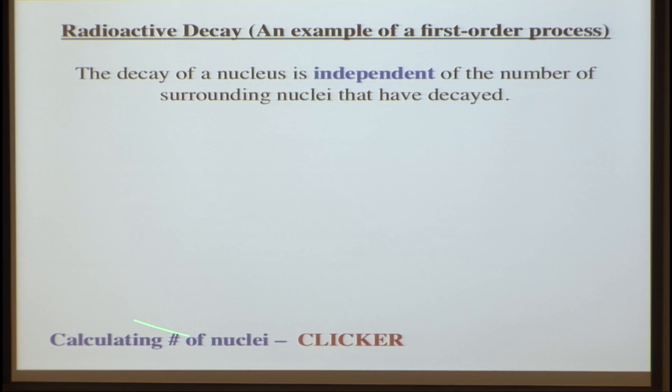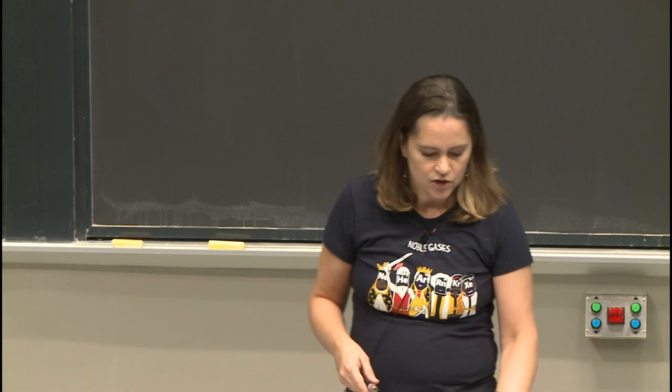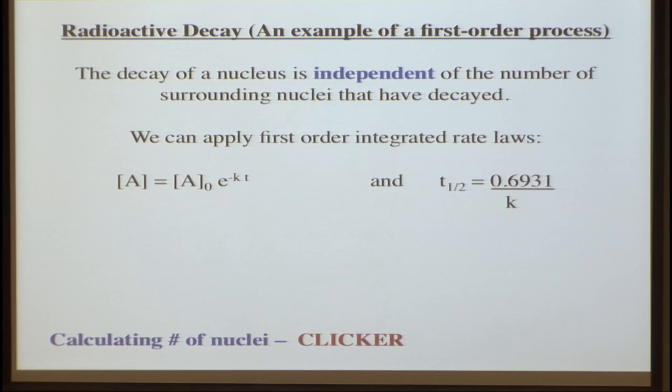The decay of a nucleus is independent of how many nuclei are around it — that's what makes it a first-order process. Because it's a first-order process, we can apply those first-order integrated rate laws that we just derived. We had our rate law: the concentration of A equals its original concentration times e to the minus k — the rate constant — times time, and also our half-life equation.